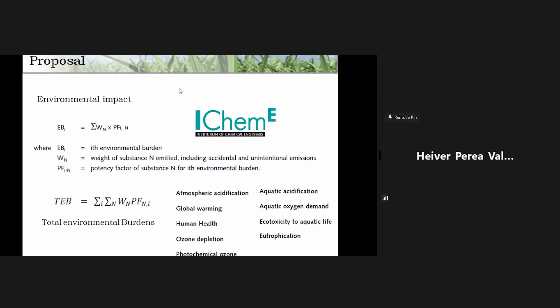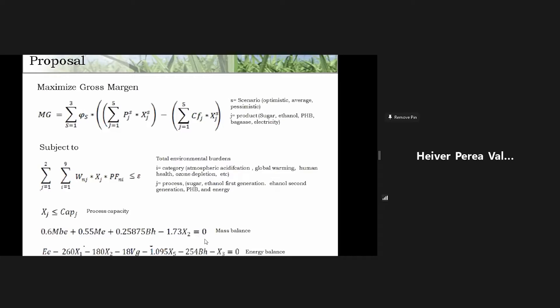For the environmental impact, I use the methodology from the Institute of Chemical Engineers. We have a formula to calculate the environmental charge for each process in each category. We have nine categories of environmental impact, such as atmospheric acidification, global warming, human health, etc. So we can calculate the environmental impact of each process: sugar process, ethanol process, energy process, PHB process, and second-generation ethanol process, using this formula.